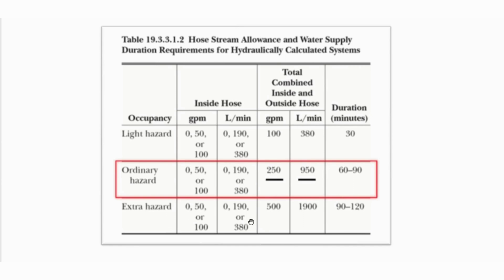For extra hazard occupancy, 500 gpm must be added to the sprinkler system demand. All this data must be entered into the calculations and is considered based on occupancy hazard classification.